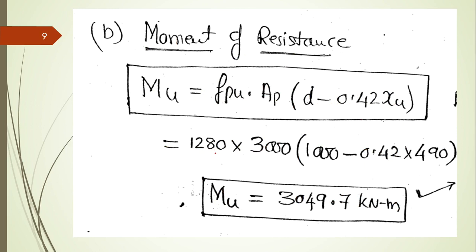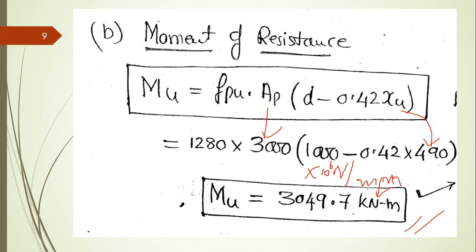The moment of resistance formula is: M_u = f_pu × A_p × (d − 0.42 x_u). Substituting: f_pu = 1280, A_p = 3000, d = 1000, x_u = 490. You get M_u = 3049.7 kN·m. Note that your calculator result will be in N·mm (×10⁶), which you must convert to kN·m.